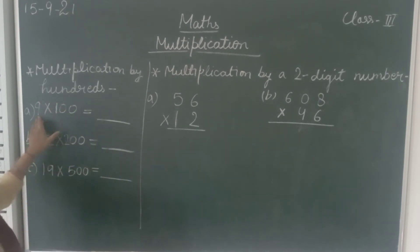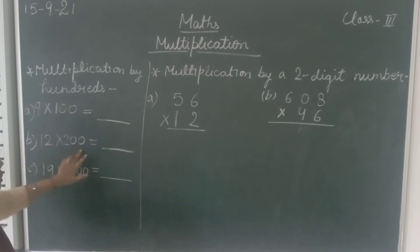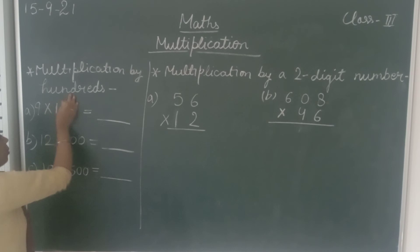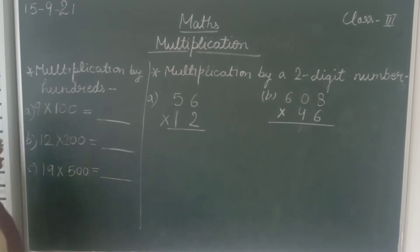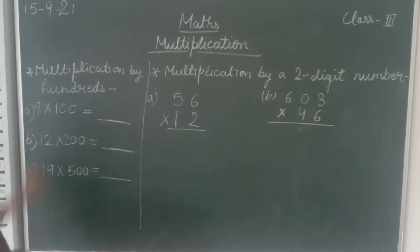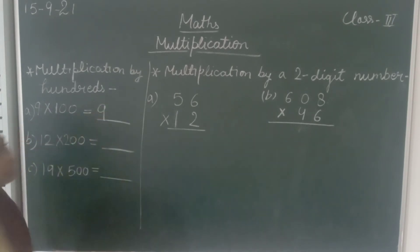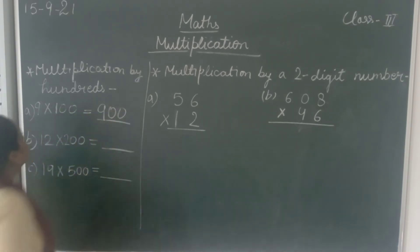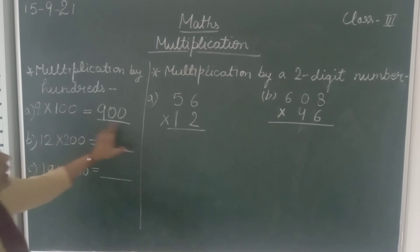First, let's multiply 9 by 100. All hundreds will have two zeros. So what you have to do is forget about the two zeros and write the first number with those two zeros appended. So 9 into 100: write 9, then add the two zeros. So 9 × 100 equals 900.